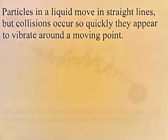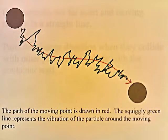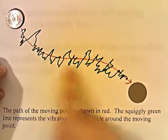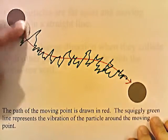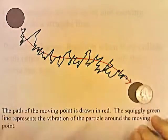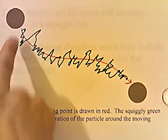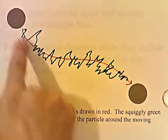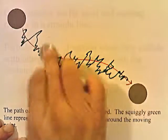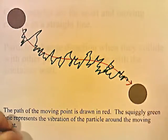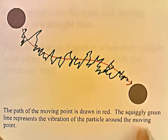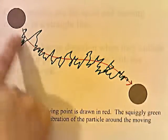Particles in a liquid move in straight lines but collisions occur so quickly they appear to vibrate around a moving point. The way this is observed is by taking particles of pollen that you can see under a microscope and watching their movement. The particle of pollen would appear to move from here to here, but as it moves it vibrates — so the net movement is like this. This is a single point moving, and about this moving point the particle moves around it. The path of the moving point is drawn in red; the squiggly green line represents the vibration of the particle around the red line or the moving point.